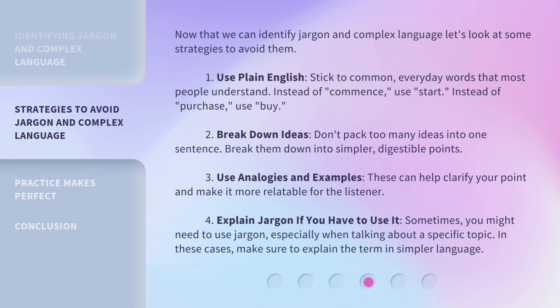Now that we can identify jargon and complex language, let's look at some strategies to avoid them. Strategy 1: Use plain English. Stick to common, everyday words that most people understand. Instead of 'commence,' use 'start.' Instead of 'purchase,' use 'buy.' Strategy 2: Break down ideas. Don't pack too many ideas into one sentence. Break them down into simpler, digestible points.